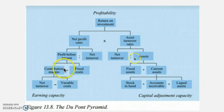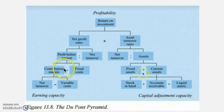If we go to the opposite side, we see the current assets and the fixed assets. Current assets include stock, accounts receivable, and liquid assets — these are put together as current assets. This means these are assets that a company is able to turn into cash. If you put fixed assets and current assets together, you get the total assets.